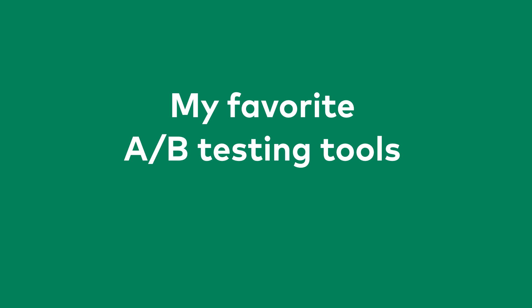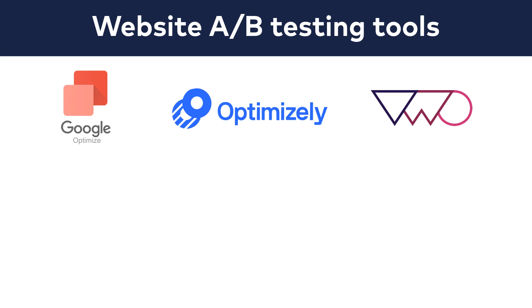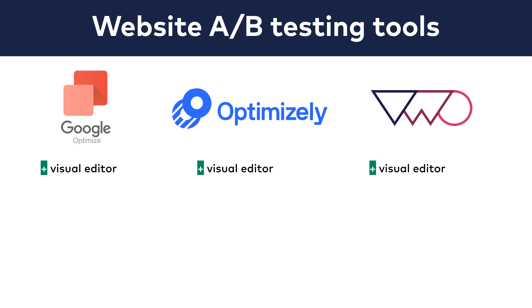Let's start with website A/B testing. I have hands-on experience with three tools — and by the way, these are also the most popular ones: Google Optimize, Optimizely, and VWO. They are popular because each of them has a nice visual editor where you can create your new variations without coding.